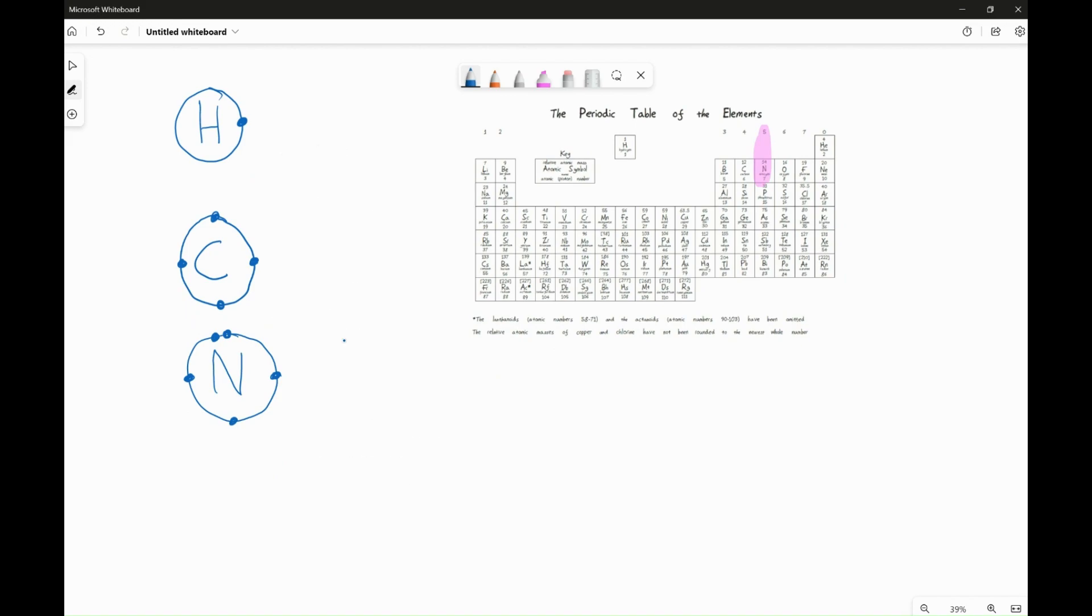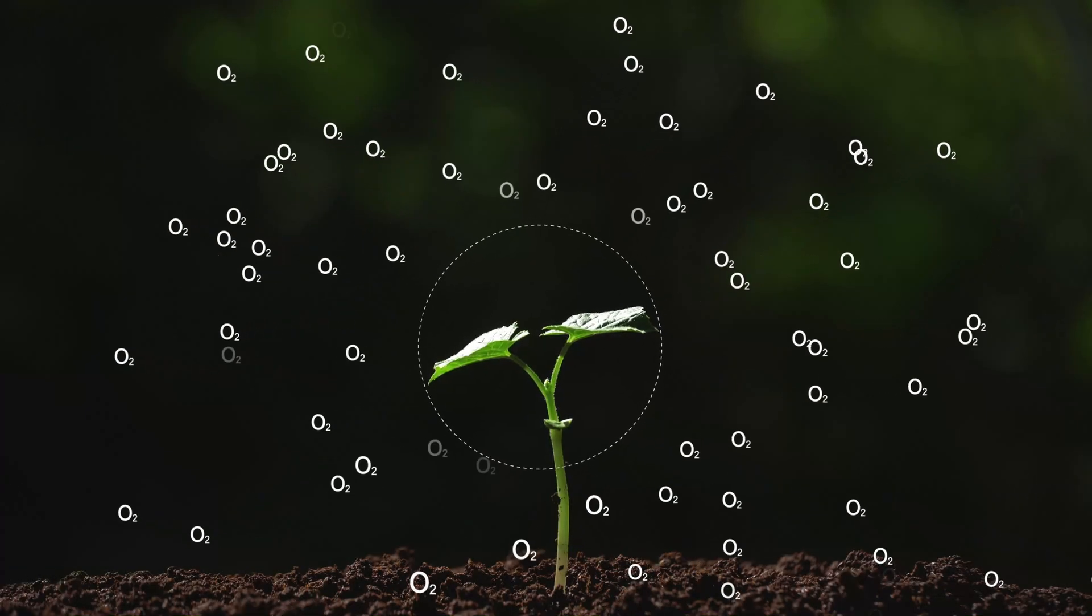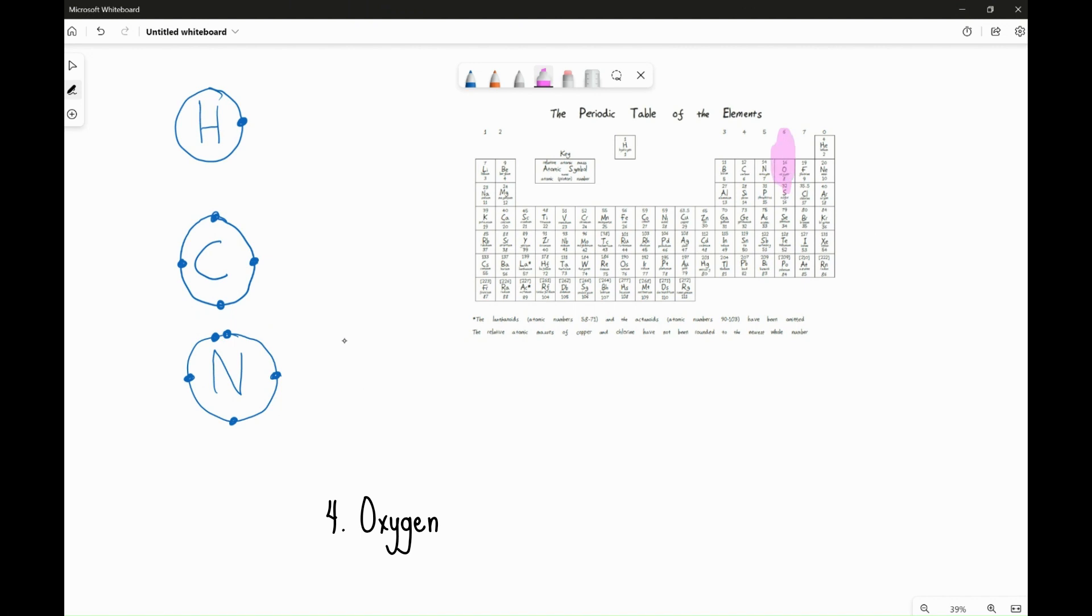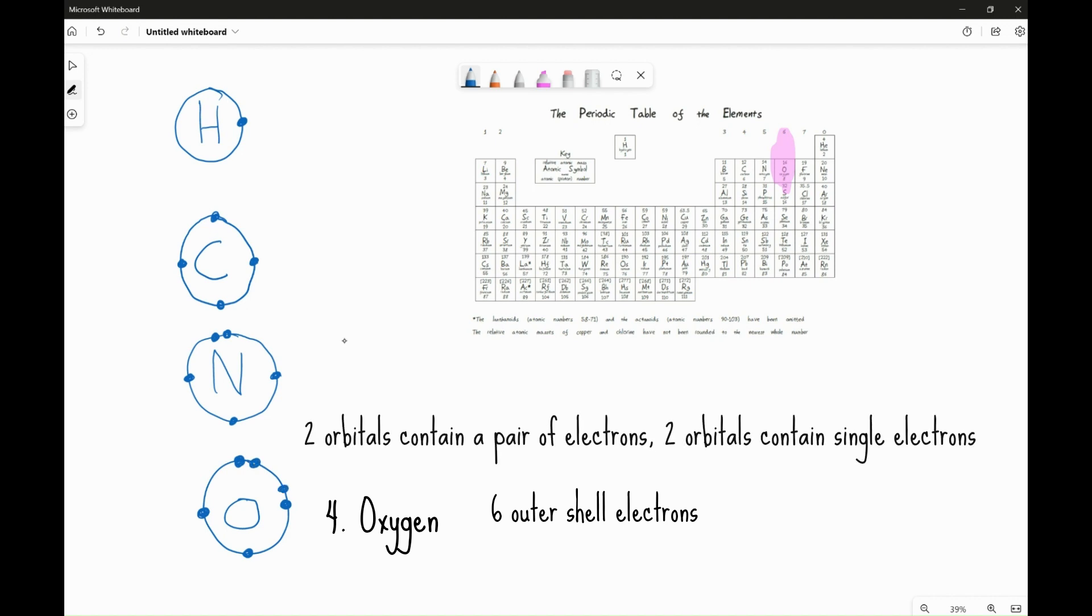Next up, we've got oxygen, which is in group 6. So oxygen will have six outer shell electrons. And again, what we're going to do is represent its four outer shell electron orbitals. And then what happens, just like with nitrogen, is you pair up. So you've got a pair here and a pair here. So you've got two pairs of electrons, two singly occupied electron orbitals.